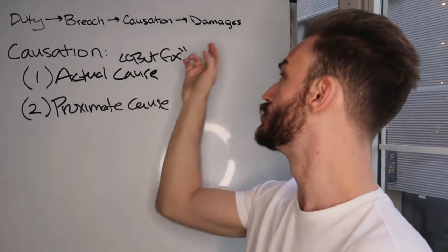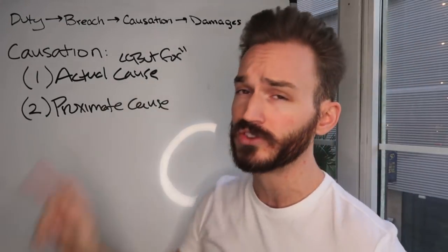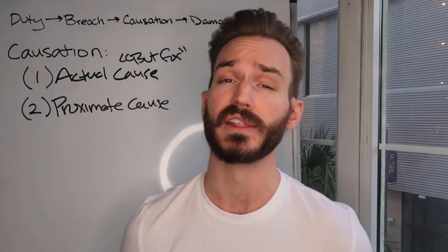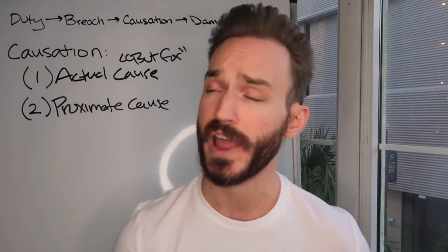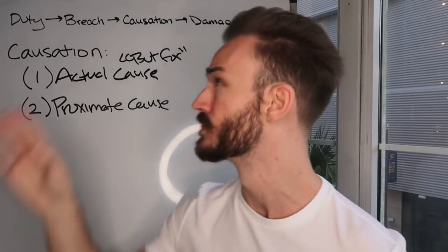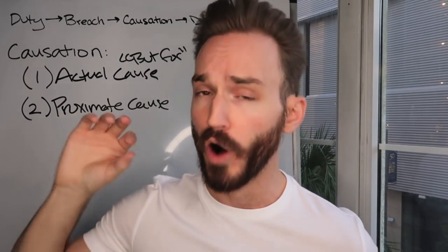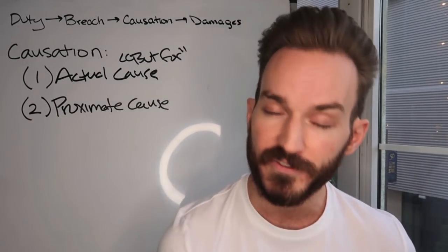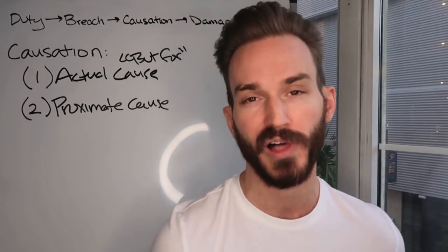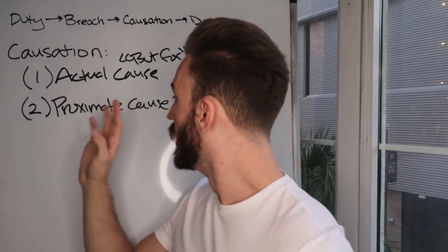If you can show damages, the plaintiff will be able to hold the defendant liable for negligence. If all four elements — duty, breach, causation, and damages — are proven by preponderance of the evidence, then the defendant can be held liable for negligence.